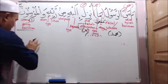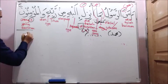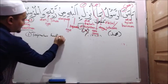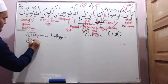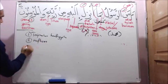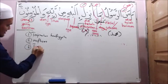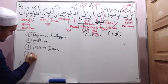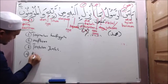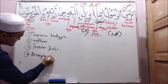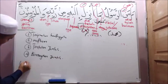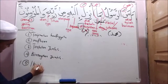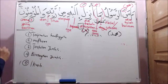Itulah cara perbahasan yang kita buat sebenarnya. Nombor satu: tarjemahan harfiah. Yang kedua: mafhum. Yang ketiga: tentukan jumlah. Yang keempat: bahaskan jumlah ataupun bincangkan jumlah. Yang kelima tuan, kita panggil dia I'rab. Dah belajar kan? Saya akan tanya satu-persatu ni tuan.